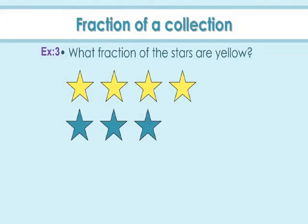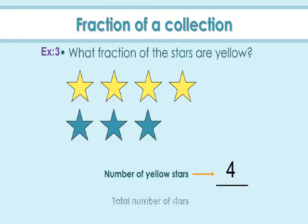Example 3: What fraction of the stars are yellow? A group of seven stars is given; out of seven stars, four stars are yellow. To write the fraction for yellow stars, write number of yellow stars by total number of stars, which is four by seven. So four sevenths of the stars are yellow.